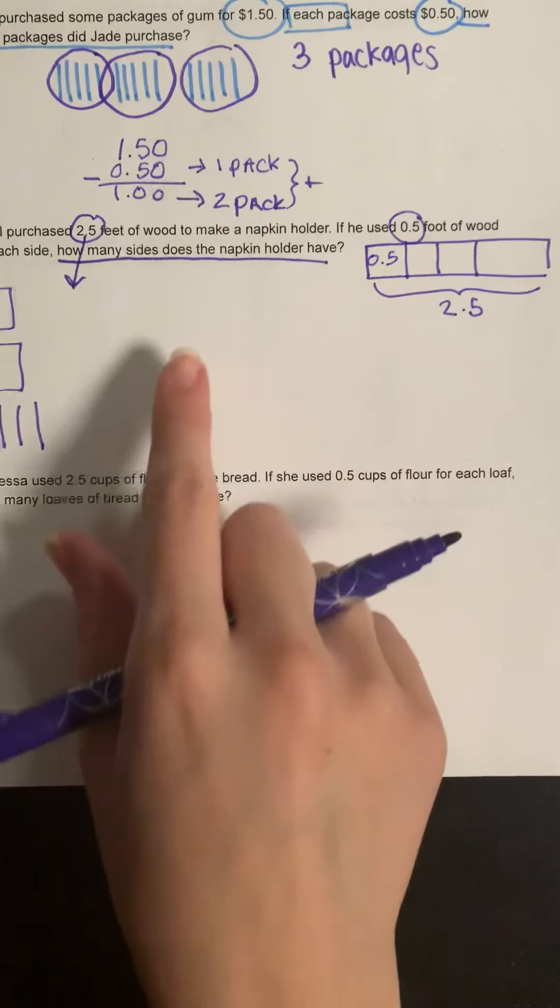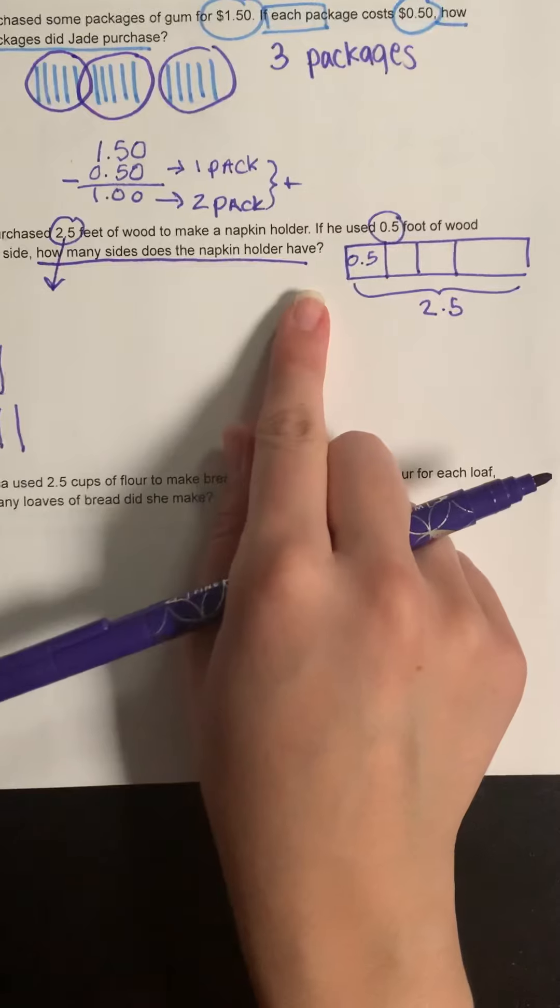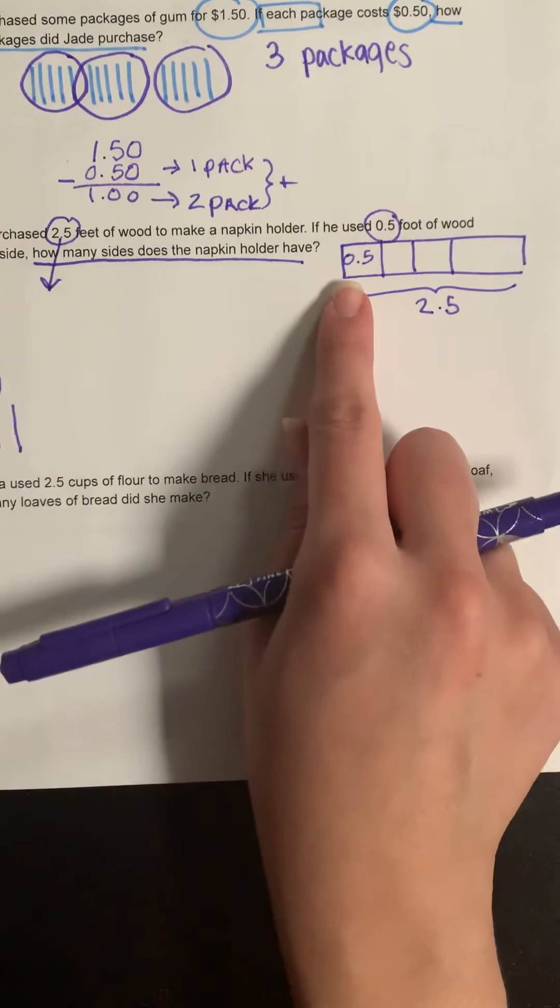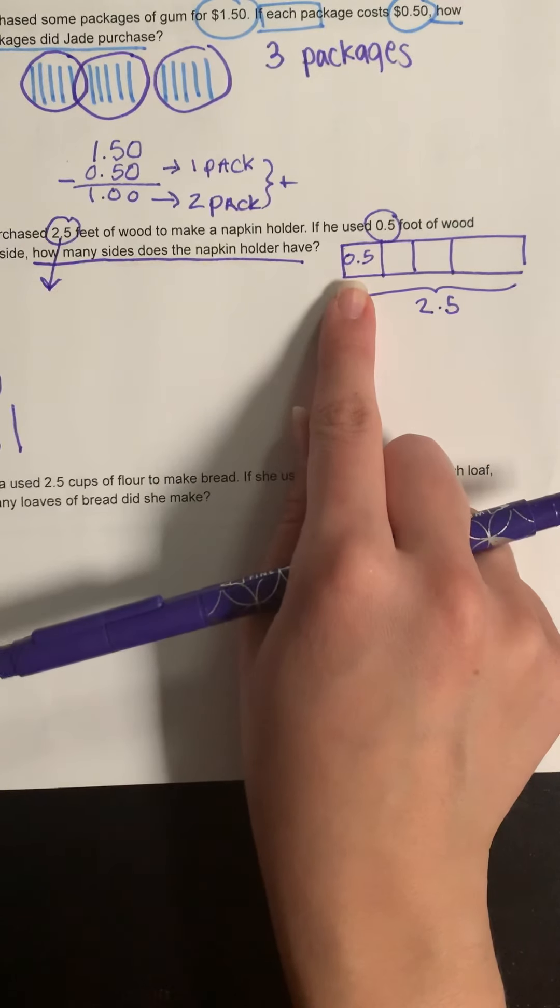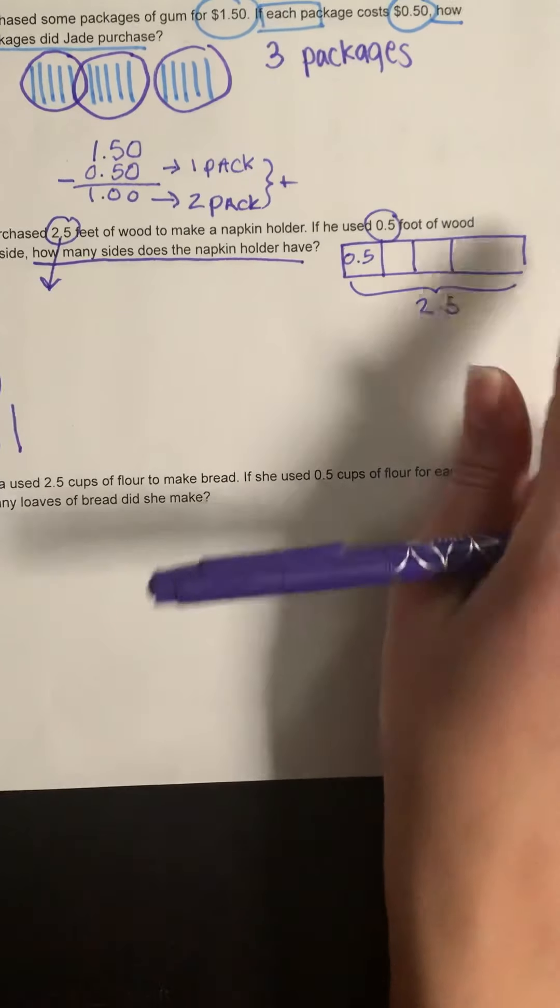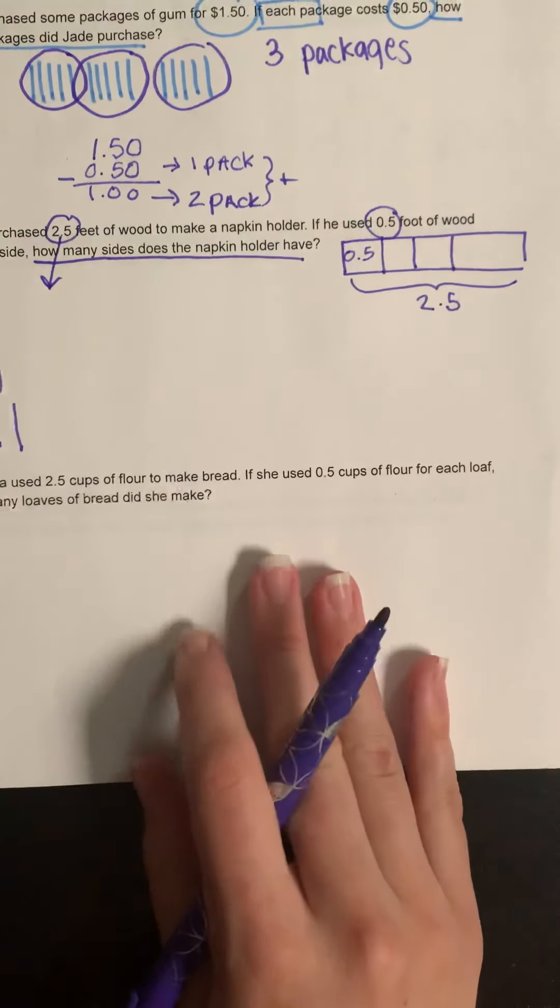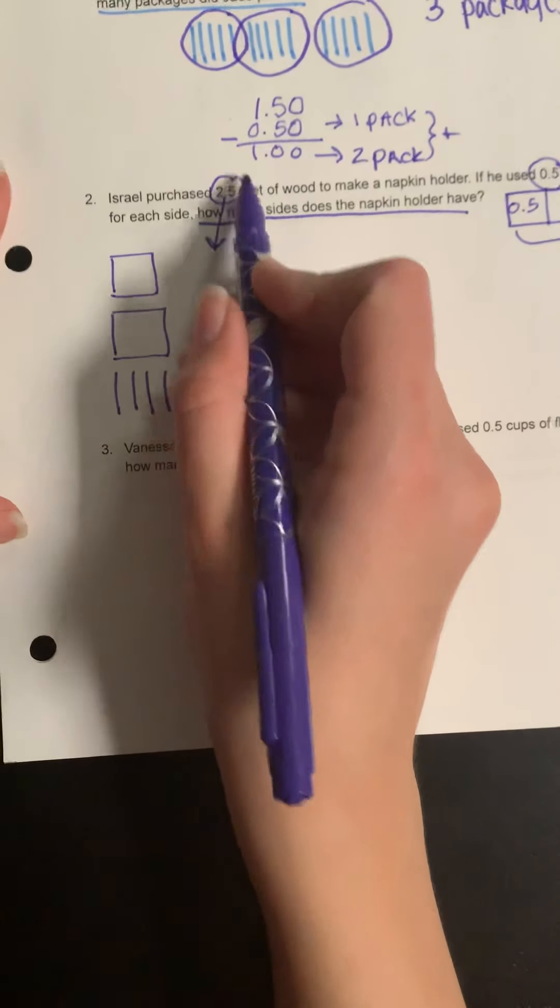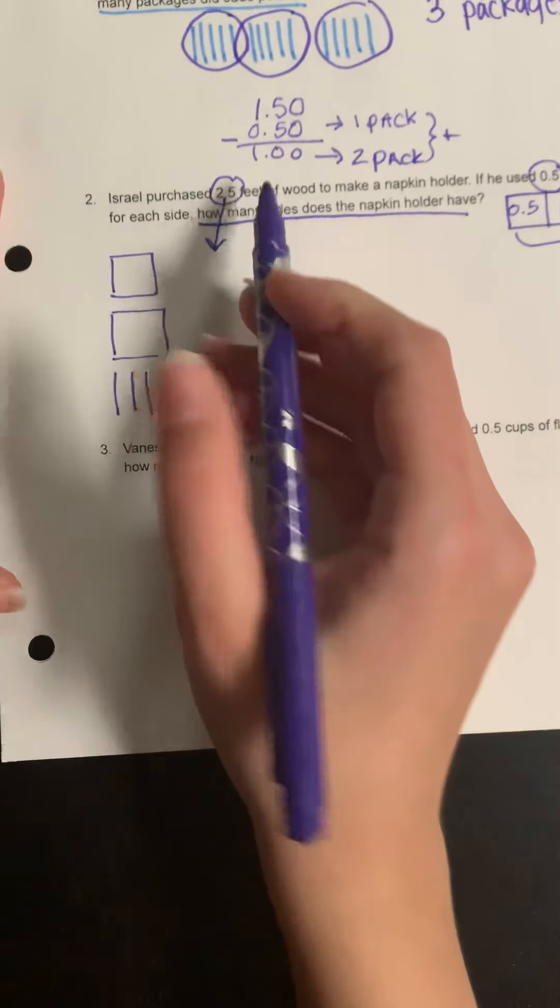Okay, so to recap what we just did: we have 2.5 feet of wood and we need to chunk it so that it's 0.5 at a time, and we want to know how many chunks we'll have for our napkin holder. So I took my 2.5 - this is all the wood that I have to start with - and I'm going to draw that using a model.